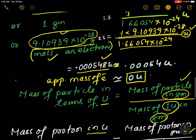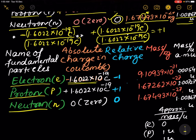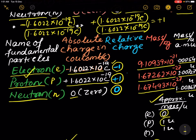In the summary table, the fundamental particles are electron (e), proton (p), and neutron (n). Absolute charges: electron is −1.6022 × 10⁻¹⁹ C, proton is +1.6022 × 10⁻¹⁹ C, neutron is 0. Relative charges: −1, +1, 0 respectively. Mass in kg: electron 9.10939 × 10⁻³¹ kg, proton and neutron ~1.67 × 10⁻²⁷ kg. Mass in u: electron 0.00054 u, proton 1.00727 u, neutron 1.00867 u. Approximate mass in u: electron ≈ 0, proton ≈ 1 u, neutron ≈ 1 u.